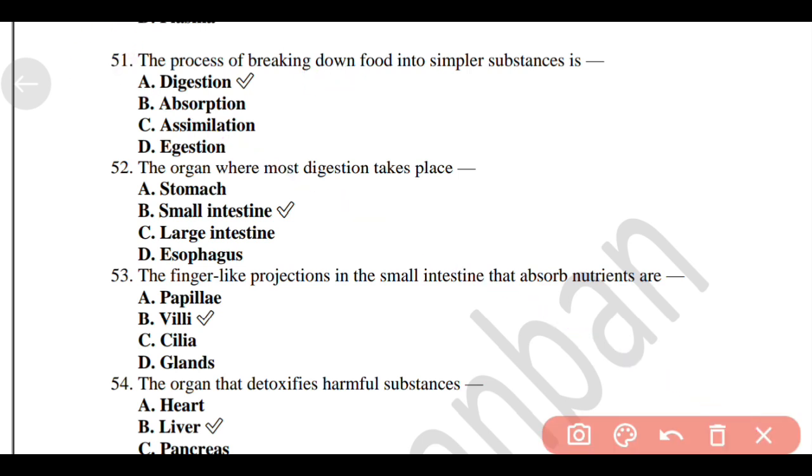The process of breaking down food into simpler substances is option A, Digestion. The organ where most digestion takes place, Option B, Small intestine.